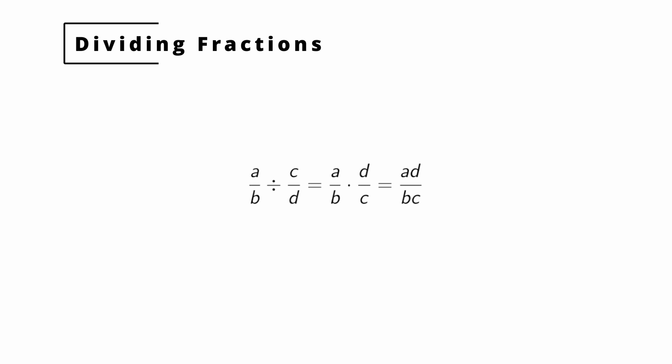Dividing rational expressions is almost as simple as multiplying rational expressions. To divide a over b by c over d, I simply multiply a over b by the reciprocal of c over d. The reciprocal of c over d is d over c — you simply reverse the fraction. It's important that you have the ordering correct: you take the reciprocal of the fraction to the right of the division symbol, and then simply multiply as usual.